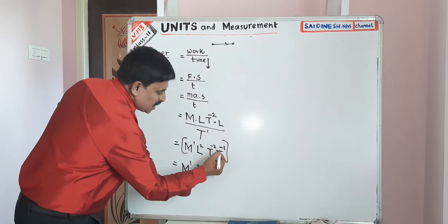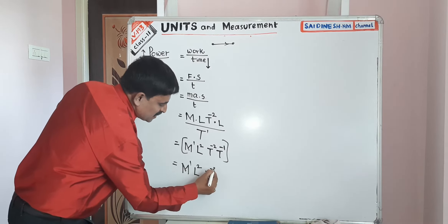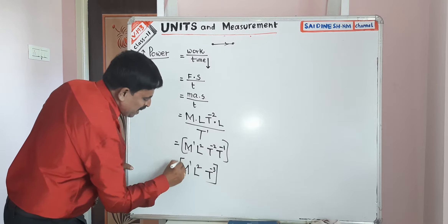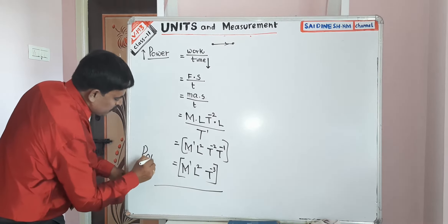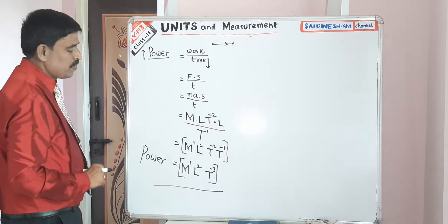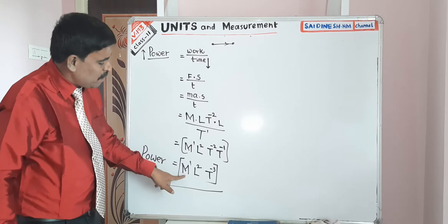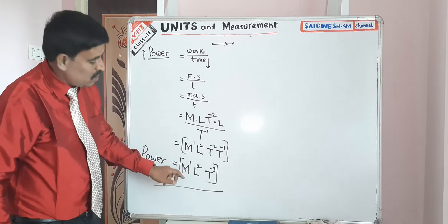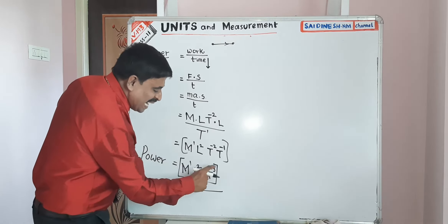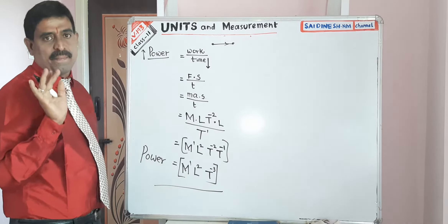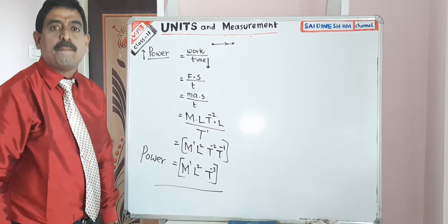That equals M L square T power minus 2 combined with T power minus 1, giving minus 2 plus minus 1 equals minus 3. So T power minus 3. This is the dimensional formula of power: 1 dimension in mass, 2 in length, minus 3 in time.